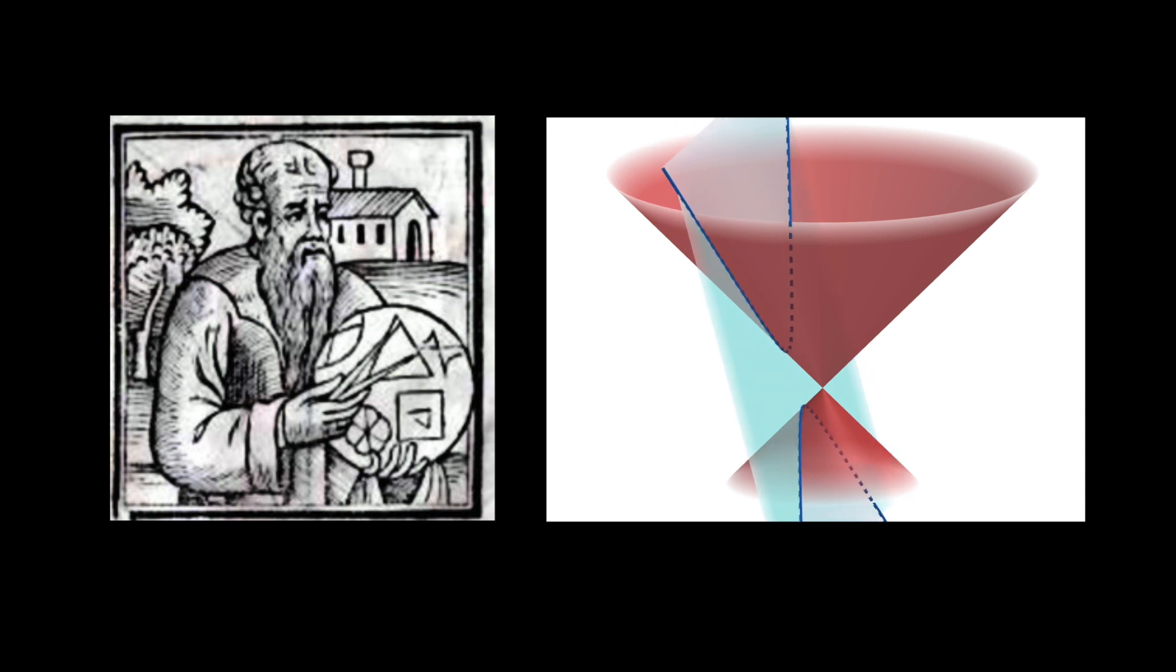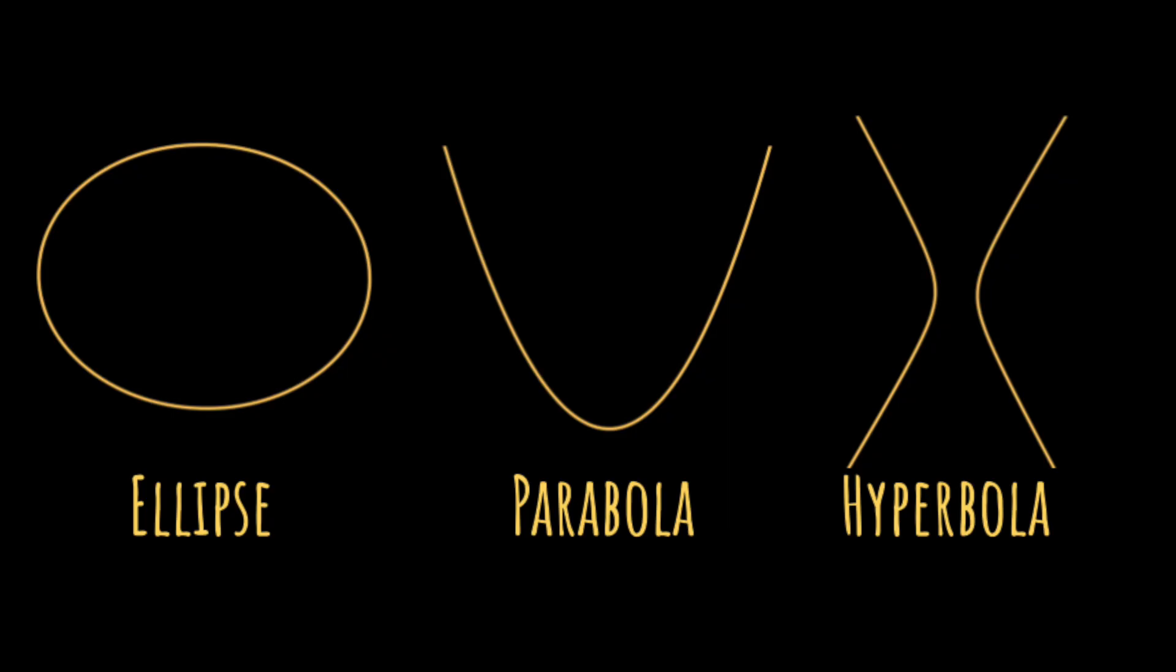The angle of the slice gives different types of curves, and Apollonius gave names to each of these types. There's the ellipse, which the circle is a special case. The parabola, which is created when the plane passes parallel to the surface of the cone. And the hyperbola, which occurs when the plane cuts through both cones, giving two separate curves.